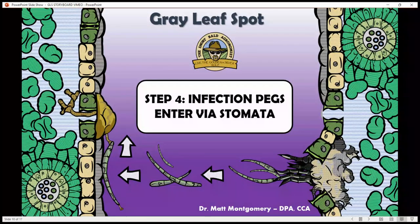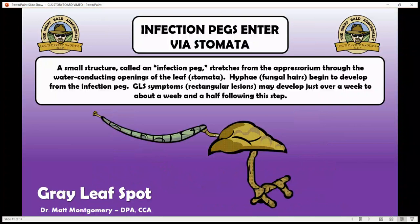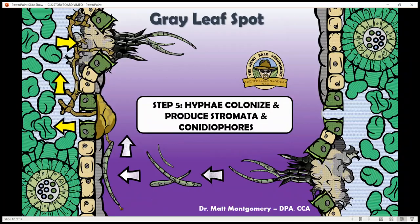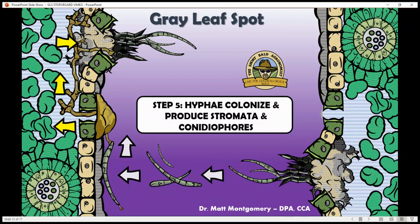That little structure over the openings in the leaf produces things called infection pegs. This precedes the growth of fungal hairs into the leaf that eventually kill tissue and result in those rectangular lesions you're very familiar with. You can see in the example on the left that lots of fungal hairs develop — they start growing through the leaf surface, consuming leaf cells, feeding off the nutrients within those cells. They eventually produce new stromata, and the cycle starts all over again.